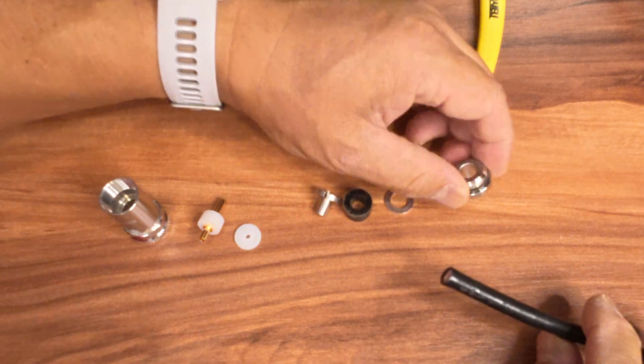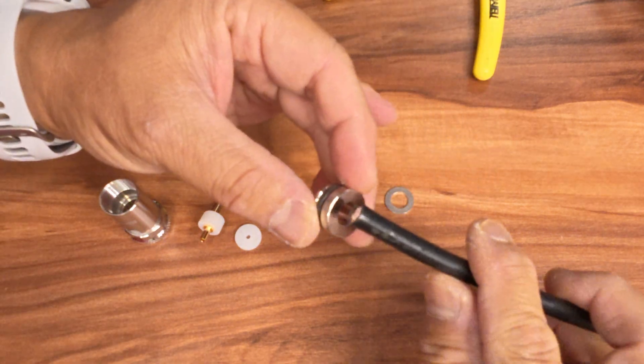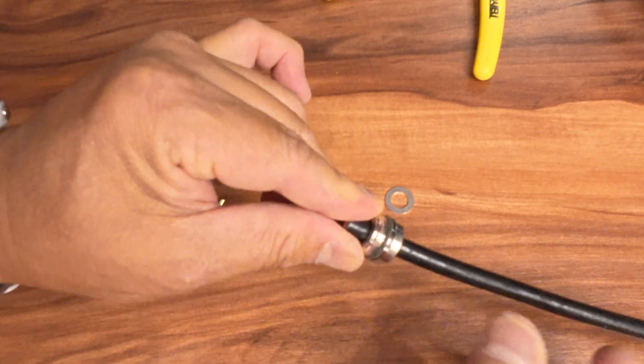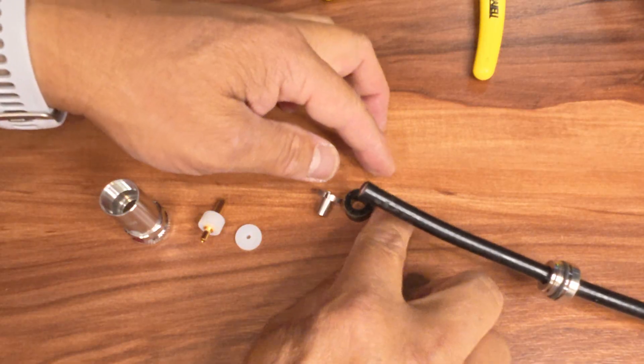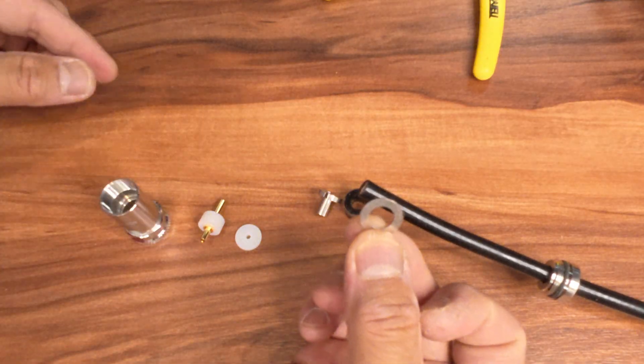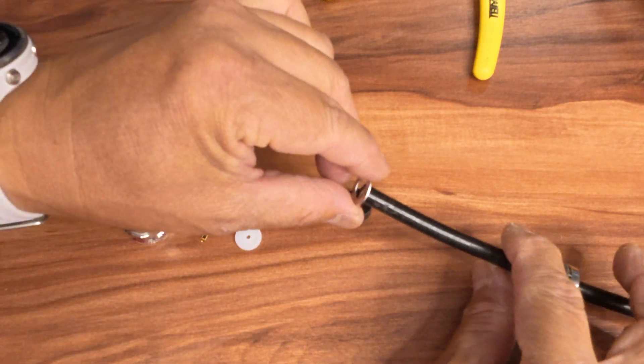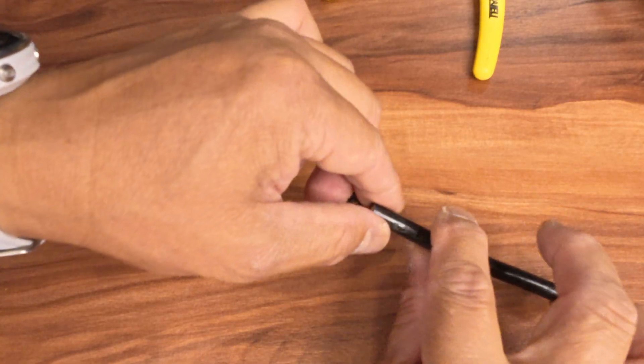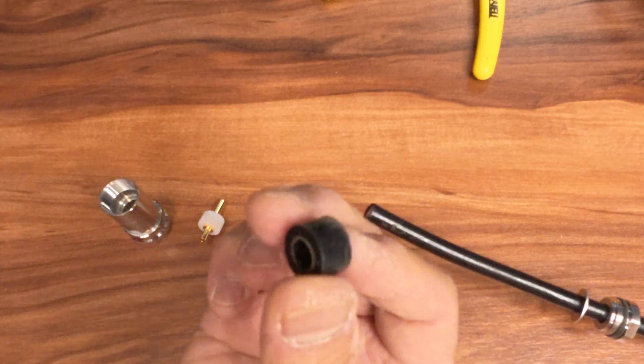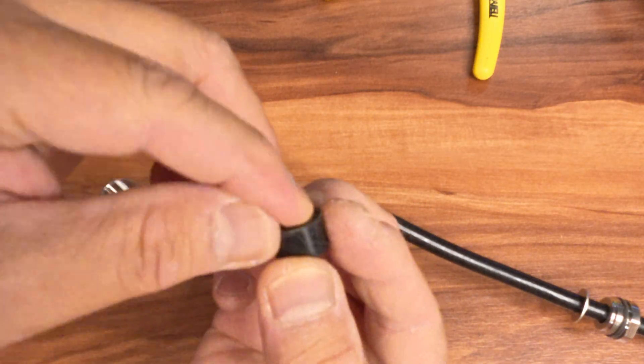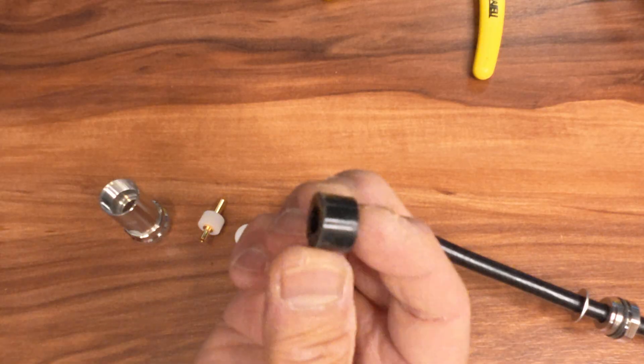Now I'll take the end and put it through the coax. The next thing is this metal washer. And then we have this rubber grommet.